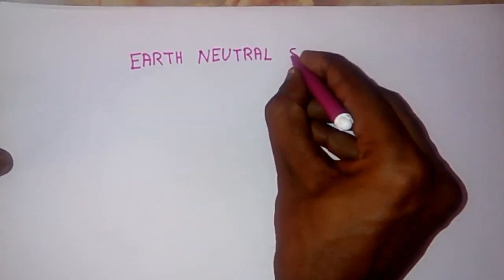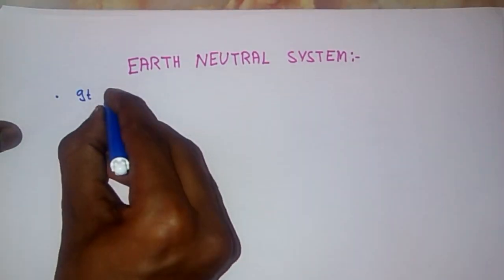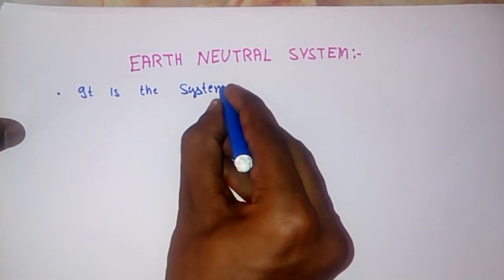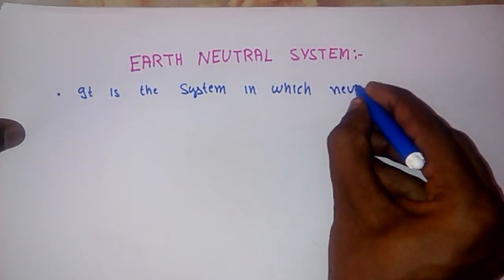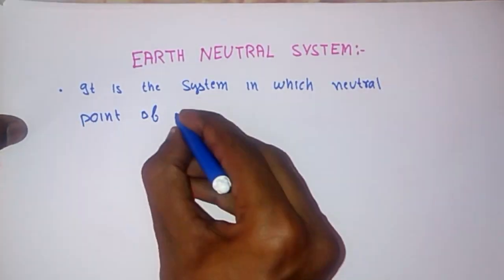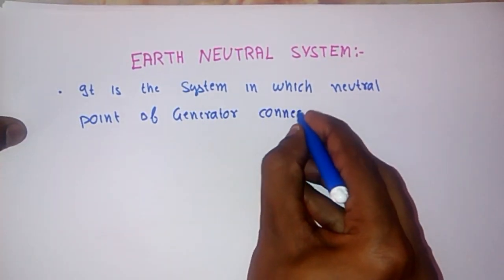Earth Neutral System. Earth Neutral System is that system in which the neutral point of the generator is connected to the earth.